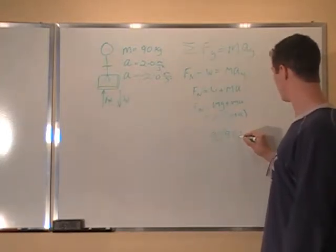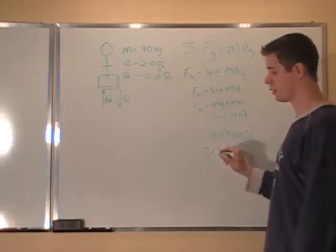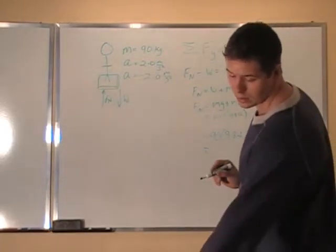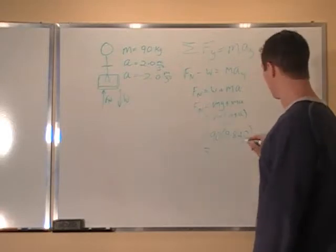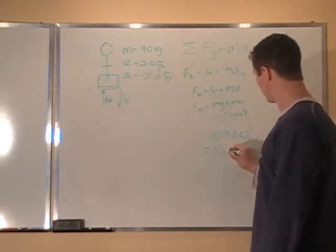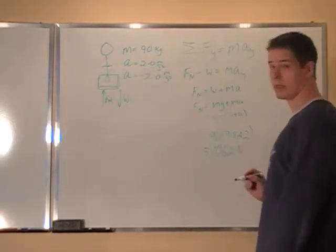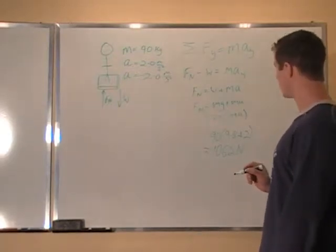And I'm going to use the positive one first, so that's going to be 11.8 times 90. And that's going to give us an answer, the scale will read 1,062 Newtons.